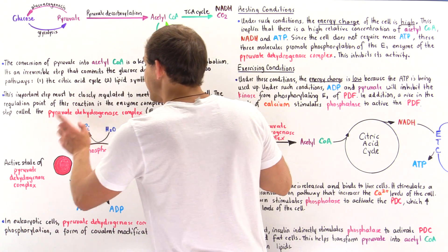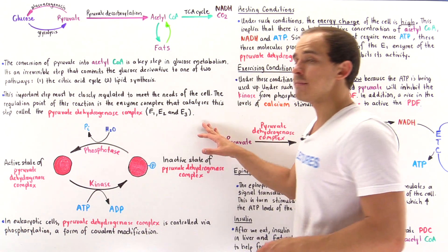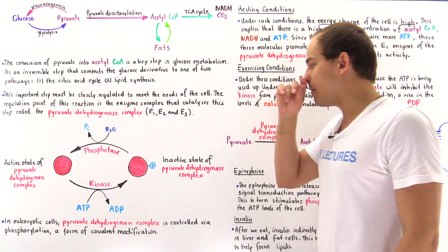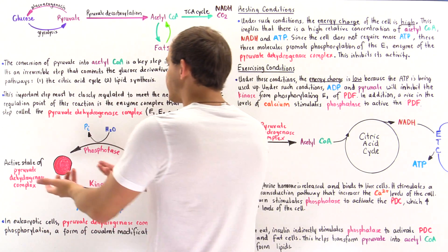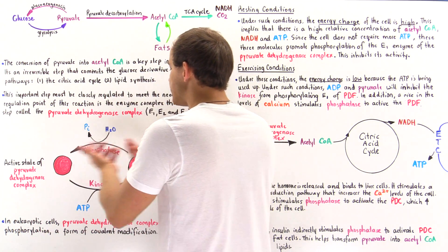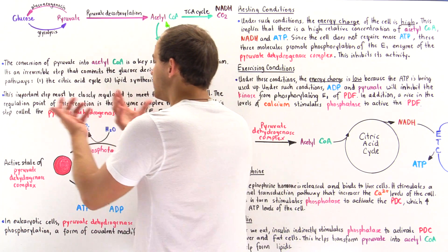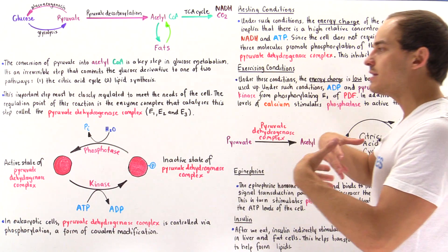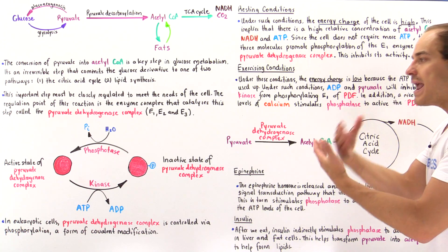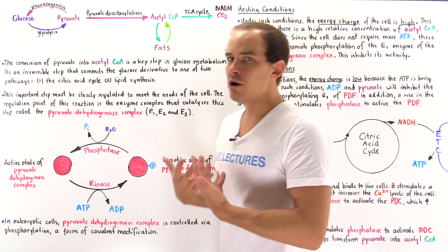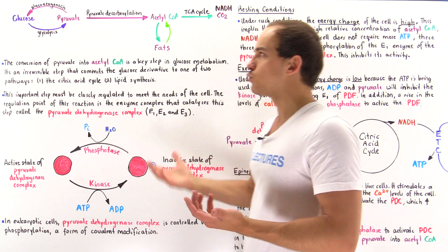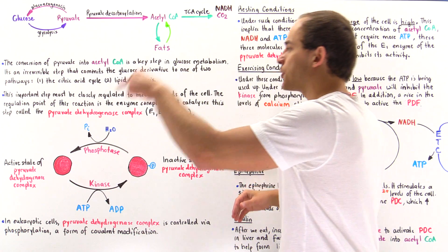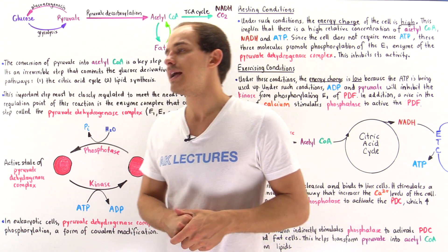So in the active state, the enzyme can catalyze pyruvate decarboxylation. We see that the complex basically moves back and forth between the active and the inactive state, and this is the major method by which the cells of our body regulate pyruvate decarboxylation and, in turn, regulate the citric acid cycle.